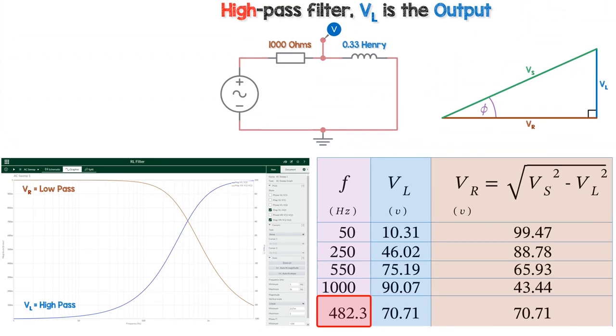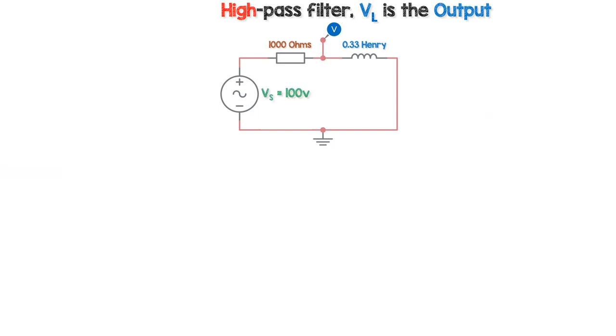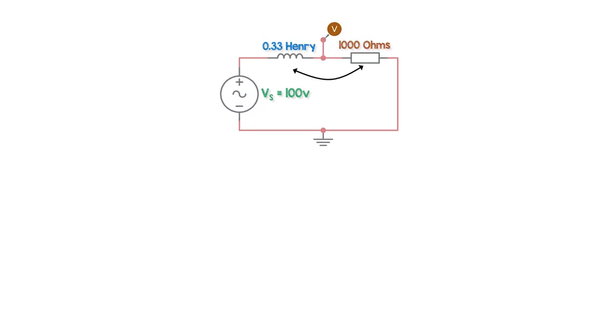But we can't use Vr as an output, as we would need two wires to show its voltage drop, which wouldn't work. Luckily there's a very easy way to change this circuit into a low pass filter, using the resistor's voltage drop. We just swap the resistor and inductor around. Now it's a low pass filter, with the resistor voltage relative to ground as the output.